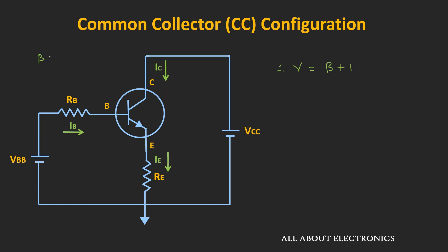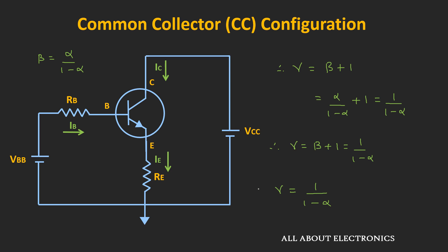We know that β equals α divided by (1 − α). Therefore, β + 1 equals α/(1 − α) + 1, which equals 1/(1 − α). This means γ = β + 1 = 1/(1 − α). Additionally, multiplying both sides of γ = 1/(1 − α) by α gives α·γ = α/(1 − α) = β. These are the relationships between α, β, and γ.